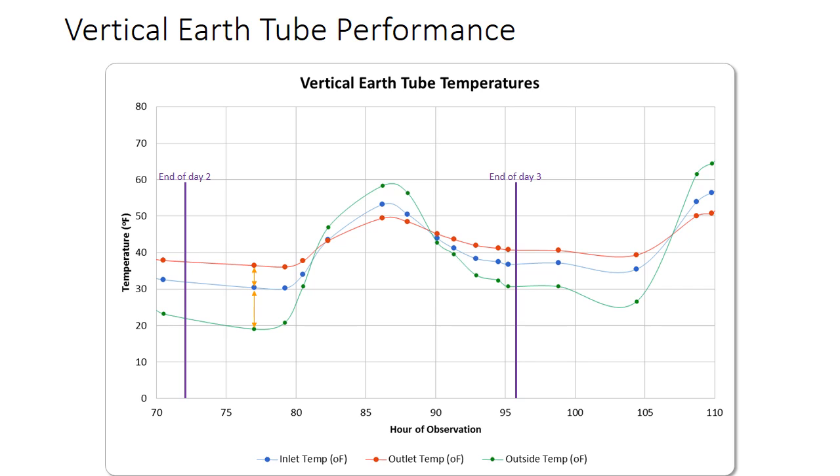So what happens as the day warms? The outside temperature rises. In this case, it's a very warm January day here in Denver, we're up near 60 degrees. The outside temperature is warmer than the temperature inside the greenhouse, which in turn is warmer than the temperature in the earth tube. There's a crossover point at about my estimation, probably 45 to 47 degrees. Colder than that, the earth tube is heating. Warmer than that, the earth tube is actually cooling.